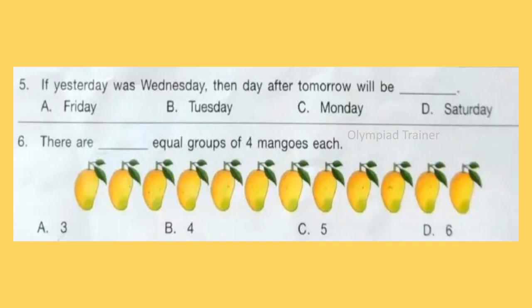Question 5: If yesterday was Wednesday then day after tomorrow will be dash. Answer is Option D, Saturday. If yesterday was Wednesday, today is Thursday, tomorrow will be Friday and day after tomorrow will be Saturday.